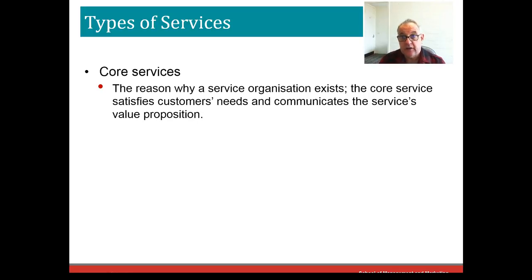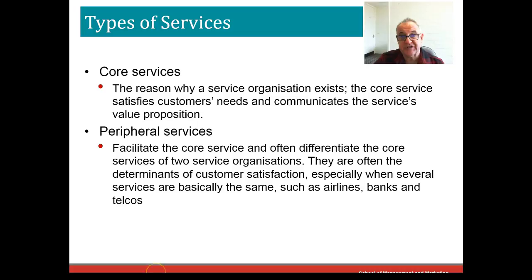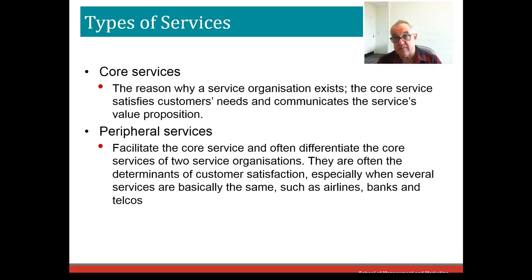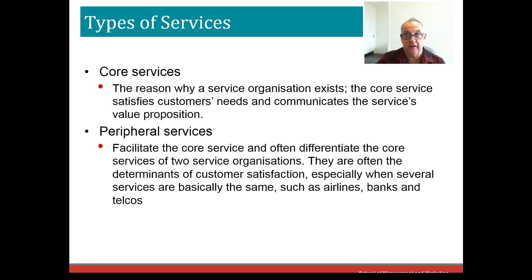We can separate services into two types: core services and peripheral services. Core services — like education, transport, and accommodation — meet a basic need and communicate a value proposition. But people also consume peripheral services at the same time. For example, visiting a hospital may involve the coffee shop or gift shop. Flying on a business trip involves food and in-flight service. Or you may strip out peripherals and focus on a core service, like Jetstar or Ryanair. Peripheral services often guide the overall assessment of service quality.